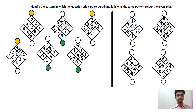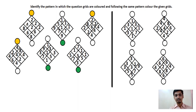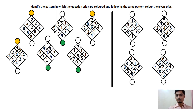Here you have the first question: identify the pattern in which the question grids are colored and, following the same pattern, color the given grids. One box on top has yellow color and at the bottom another box has green color, so you have only two colors. Now look at the first box — you have numbers 2, 4, 6, 8, so these are colored with yellow. The second box has 1, 5, 9, 7 and they are colored with green.